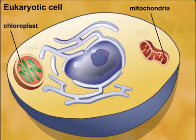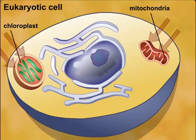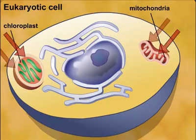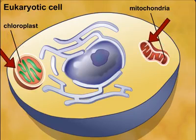Second, both mitochondria and chloroplasts are surrounded by two membranes. The inner membrane probably evolved from the plasma membrane of the engulfed prokaryote, while the outer membrane is probably derived from the cell membrane of the host.